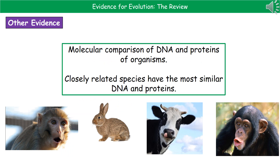Another source of evidence for evolution comes through the molecular comparison of DNA and proteins between different organisms. What we find is that if we've got two closely related species, their DNA and proteins are the most similar to one another. Looking at four different organisms at the bottom, the chimpanzee on the right - if we look at one particular protein, it's identical to ours in humans. So we can see that we're far more closely related to the chimpanzee than we are to any of the others, but the rhesus monkey isn't far behind. We can then build up almost a giant family tree of everything on the planet.